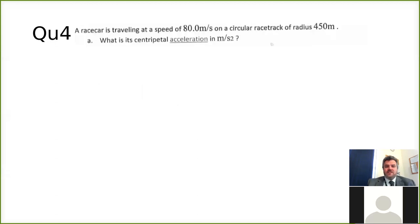Question number four. I gave you a racing car traveling at a speed of 80 meters per second on a circular racetrack with a radius of 450 meters. And you want to work out centripetal acceleration.